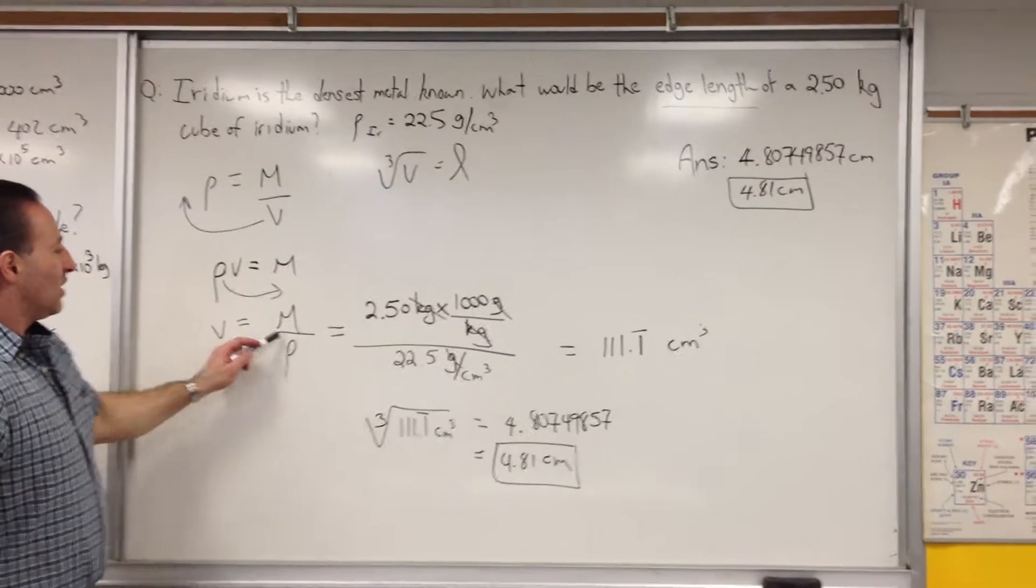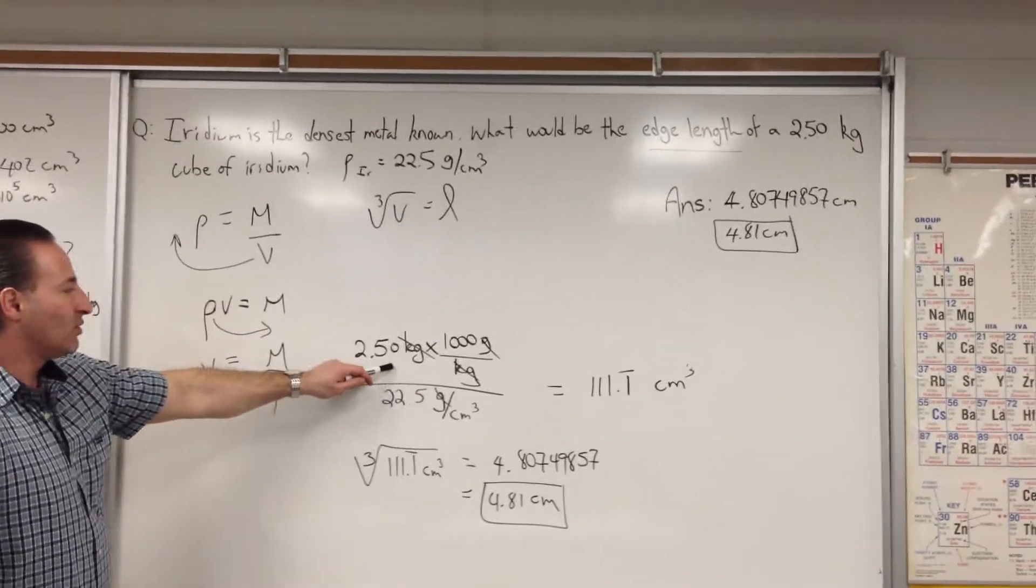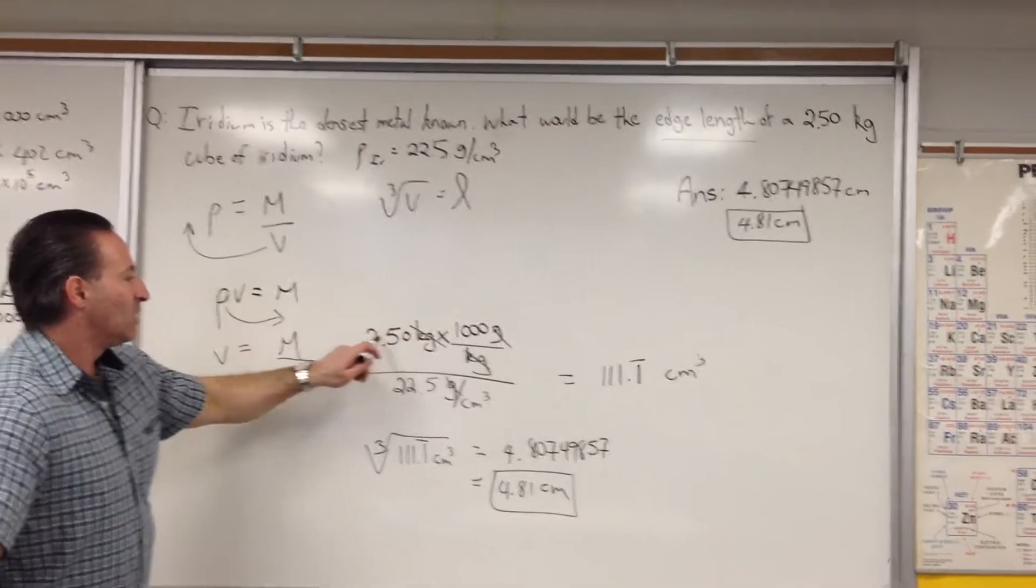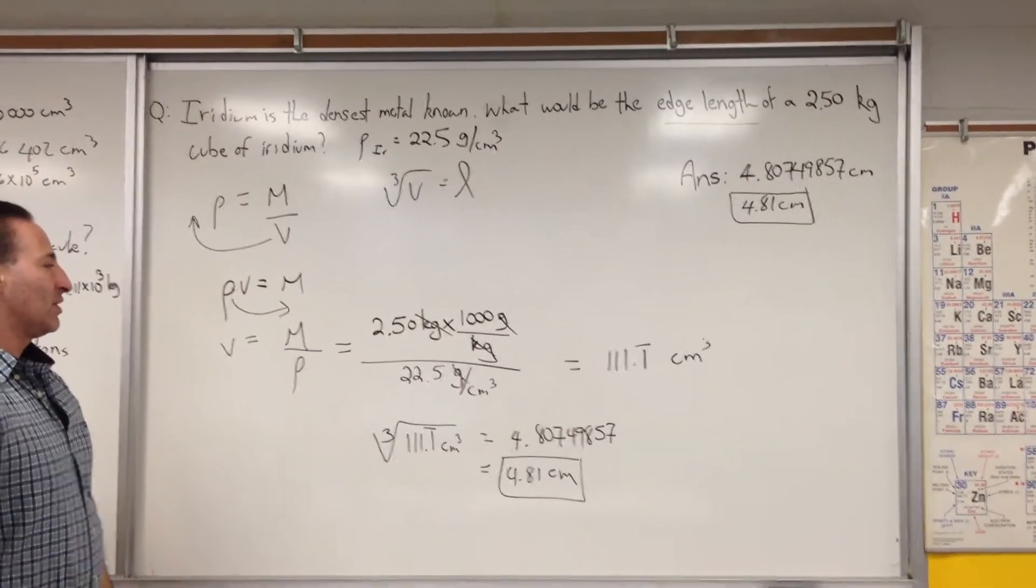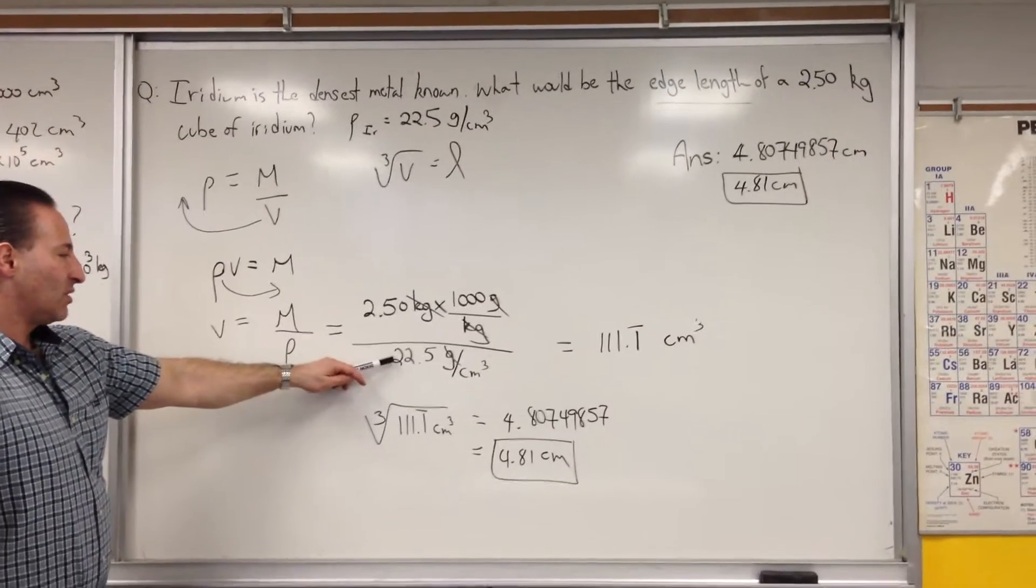Once we find the volume by entering the mass, remember to convert kilograms into grams. Because 2.5 kilograms times 1,000 grams gives you 2,500 grams. We divide by the density of the metal.